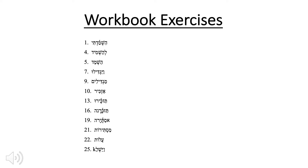How exactly do we parse these particular words? Let's start with number one. Number one is a Hiphil perfect 1cs. You can see the 1cs — the tav plus the hirik yod at the end of the verb. You can also see the Hiphil prefix with the hirik at the beginning of the verb. You'll notice that there is no dagesh in the shin and there's also no qamets under the shin, so this is not in the Niphal class of verbs. This is a Hiphil perfect 1cs.